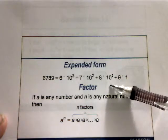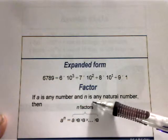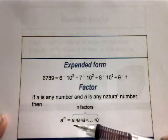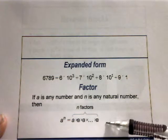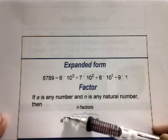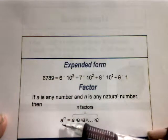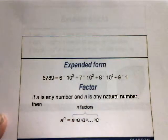The next term is a factor. If a is any number and n is a natural number, then a to the n equals a times a times a, and so on. The exponent n tells you that a is going to be used as a factor n times, so you'll have n factors.